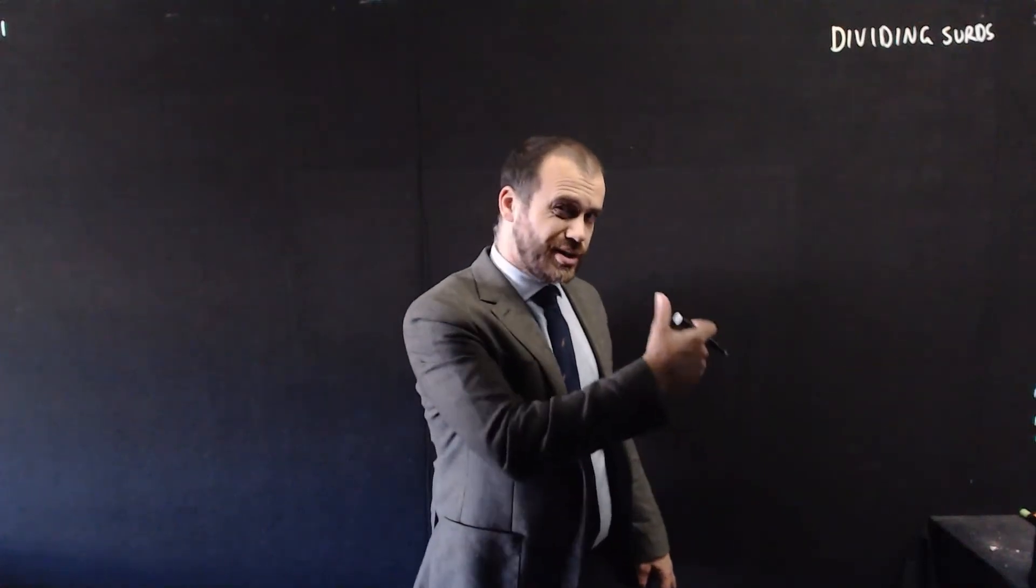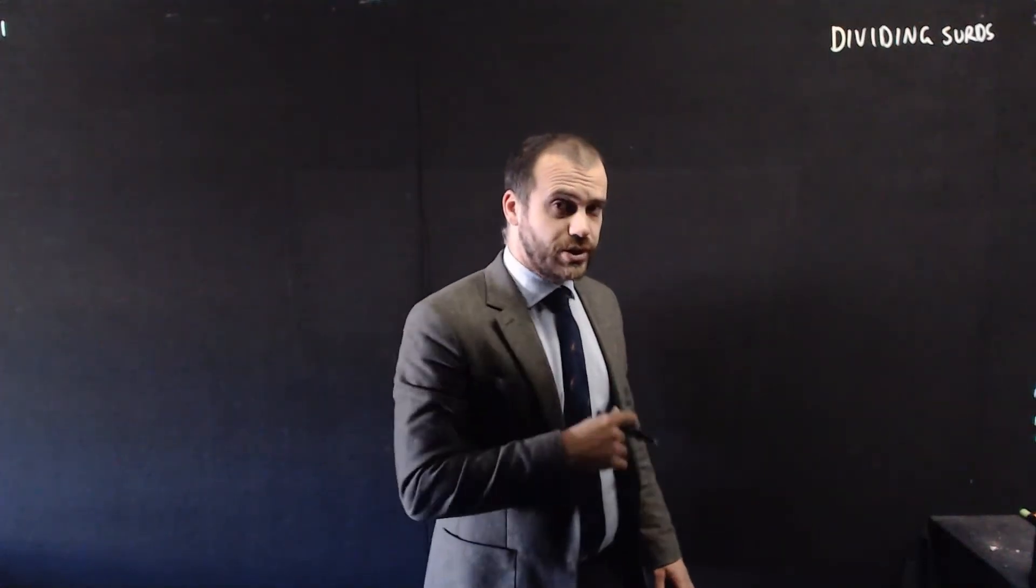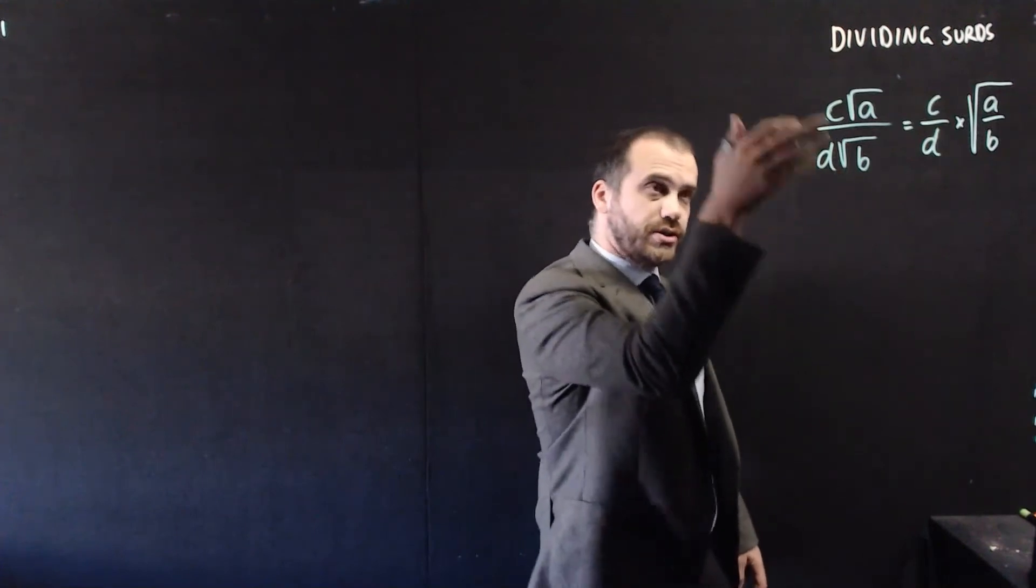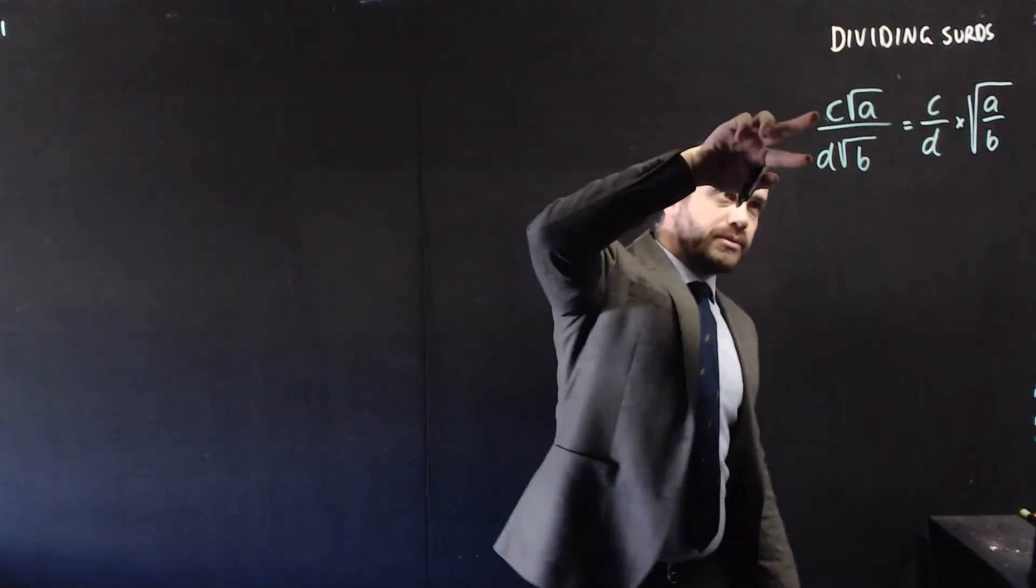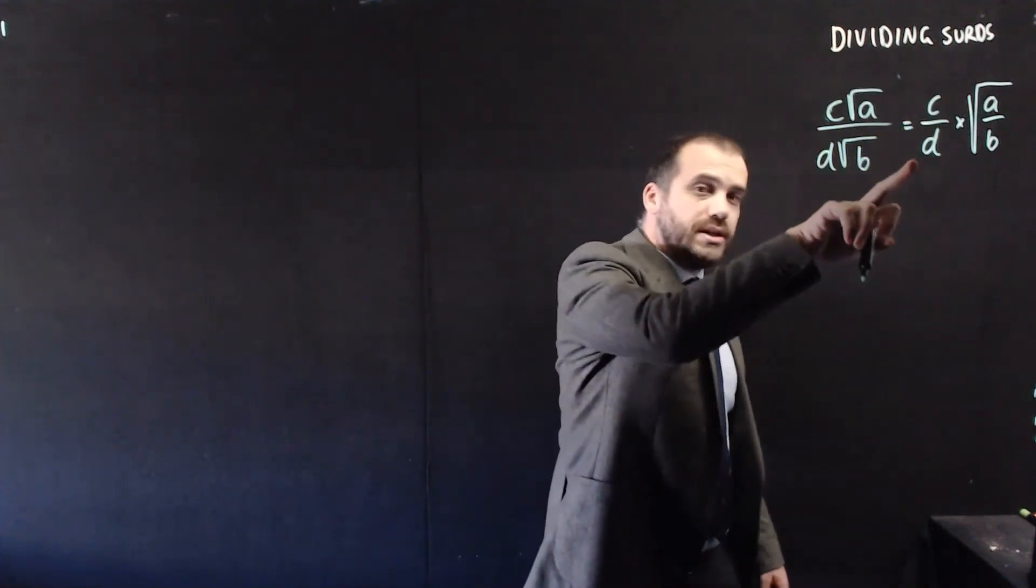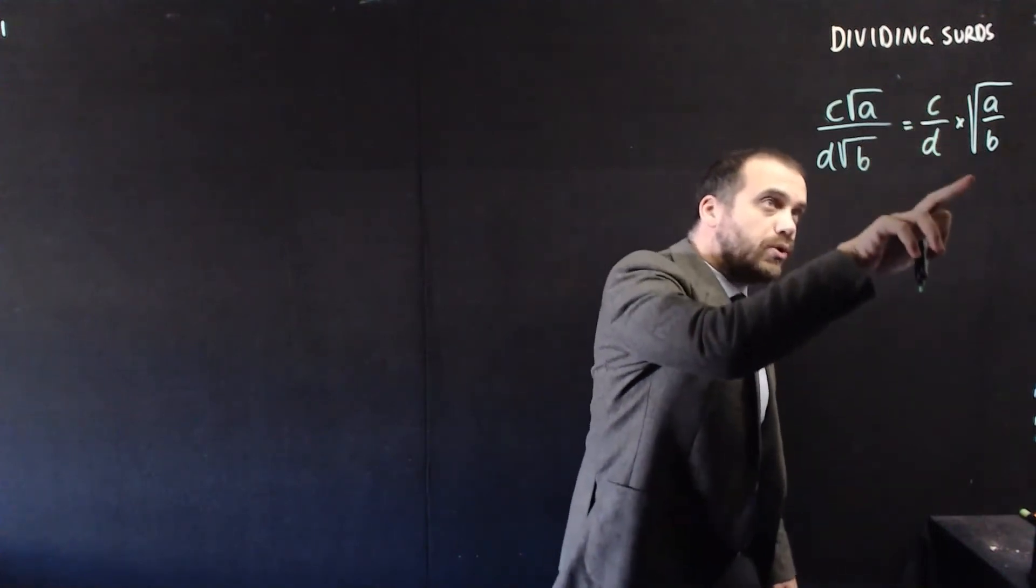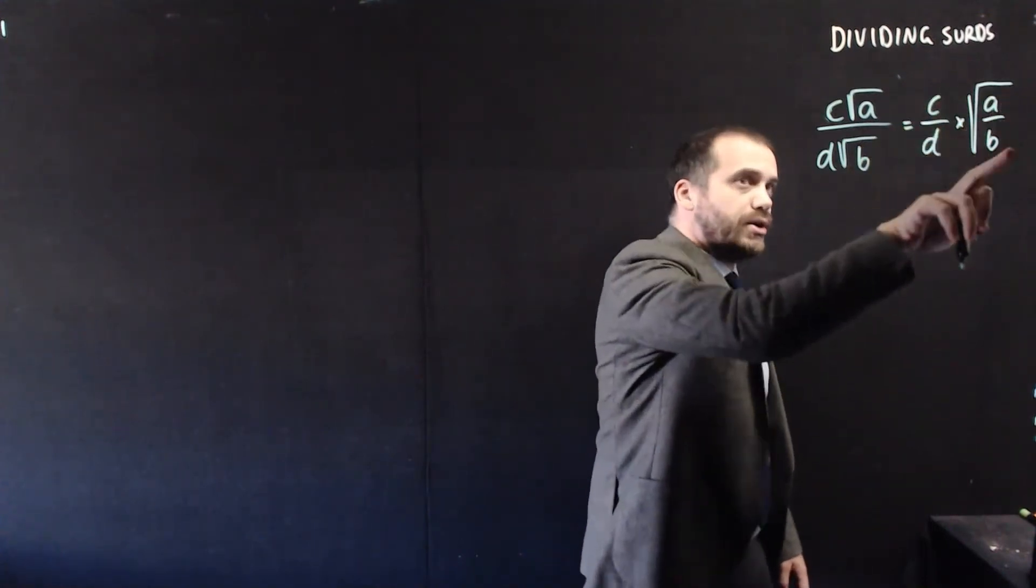So we're going to keep this one fast, dividing surds. It's going to feel a lot like multiplying surds. Here's our rule. If you've got two surds divided by each other, c over d times all square root a over b.